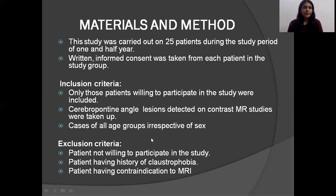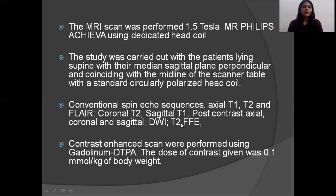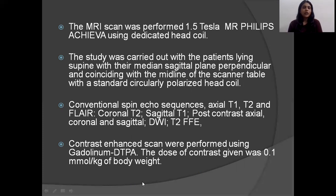In my study, I carried 25 patients over a period of one and a half years. I included patients willing to participate with CP angle lesions detected on contrast MRI in all age groups. Patients not willing to participate, those with claustrophobia, or contraindications to MRI were excluded. MRI was performed with a 1.5 Tesla Philips Achieva MR scanner using a dedicated head coil, with the patient in supine position. Sequences used include T1, T2, FLAIR, post-contrast images, diffusion-weighted, and FISP. Contrast imaging was performed using gadolinium DTPA contrast agent.